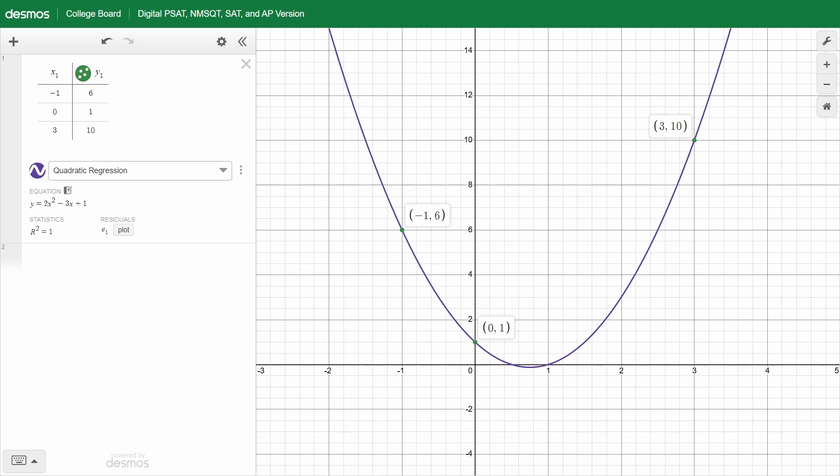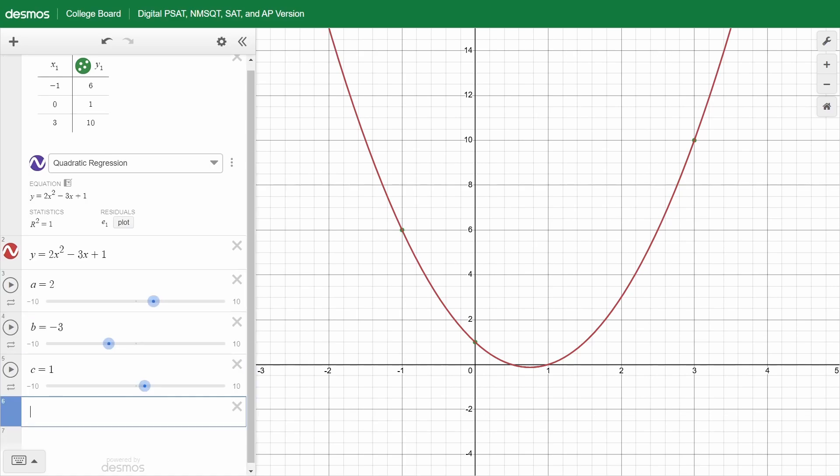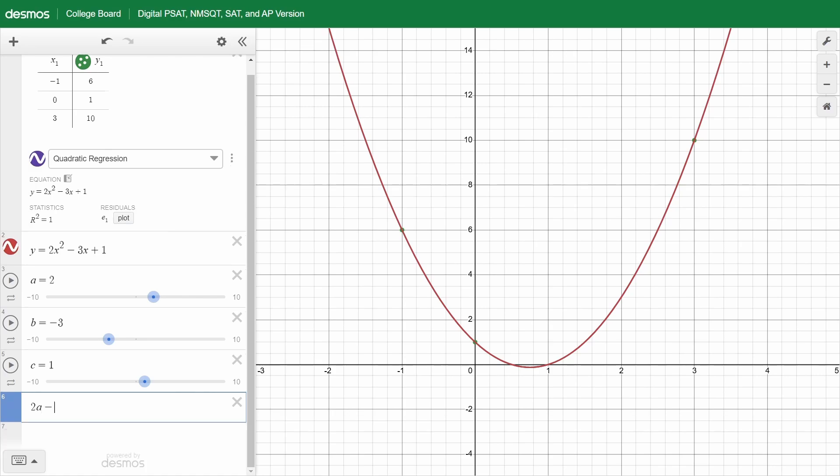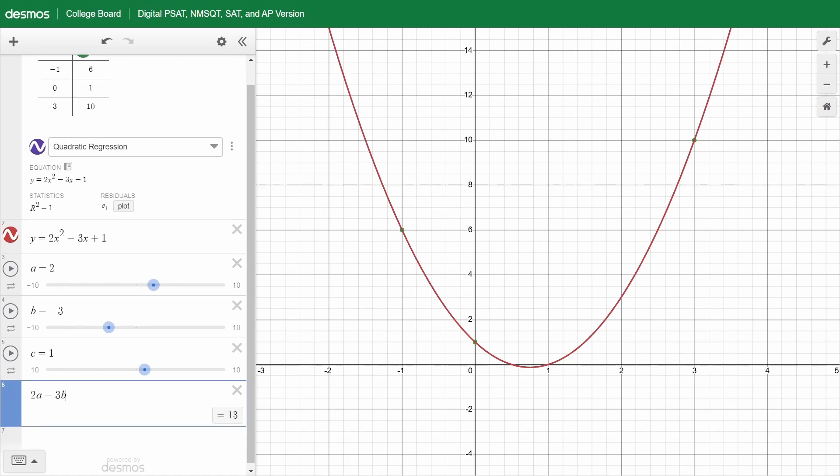Now I can click on this little thing here export snapshot. I noticed that a is 2, b is negative 3, and c is 1. And the question wants me to find 2a minus 3b. And the answer for this one is 13.